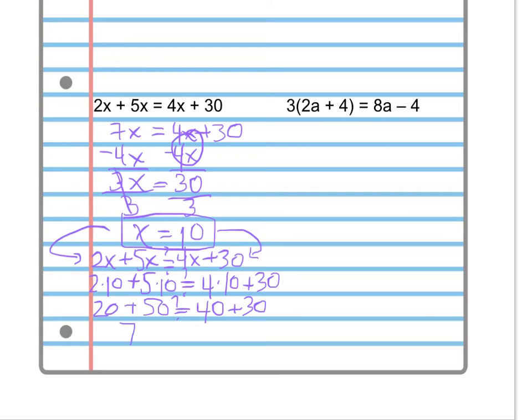Well, we know 20 plus 50 is 70. And over here, 40 plus 30 is 70. Is this a true statement? 70 equals 70? You betcha. So that means that our answer is correct. We did the problem correct, and that our value of x equals 10 is correct.